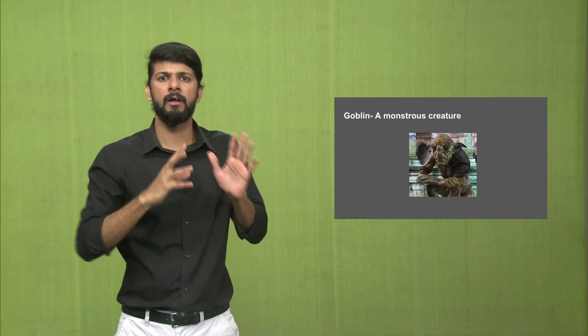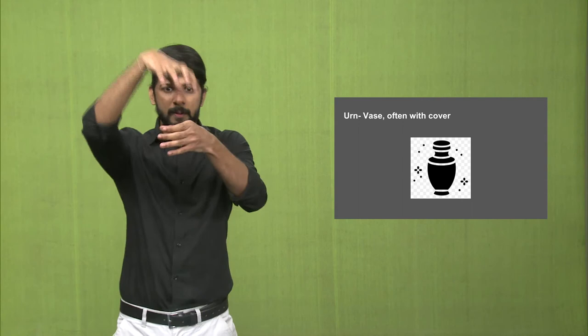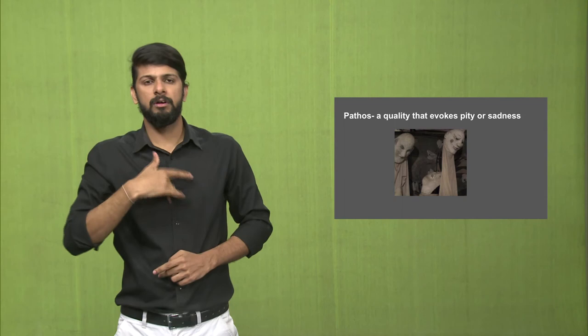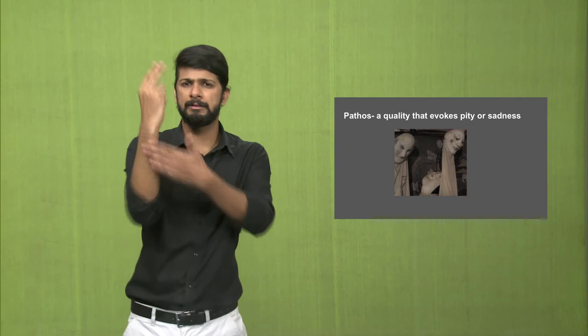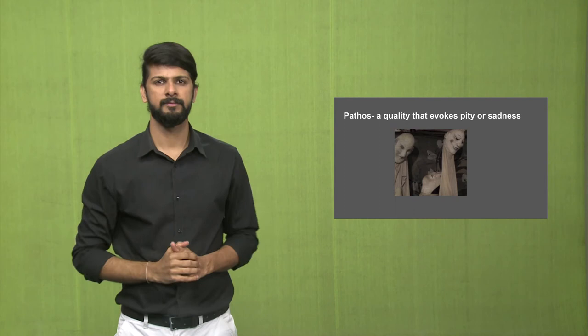'Goblin' is a monstrous creature. 'Archaeological Survey of India' or ASI is a department under the Ministry of Culture responsible for research, conservation, and protection of cultural monuments in India. 'Urn' is a vase which often has a cover. 'Pathos' is a quality which evokes pity or sadness — for example, it could be a movie or an artwork which evokes a kind of sadness or sorrow within us.